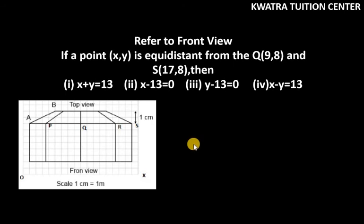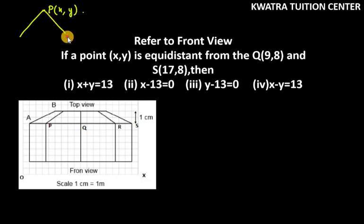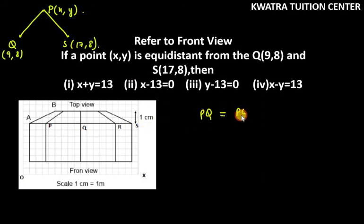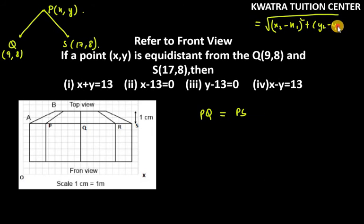The last part says: if a point (x, y) is equidistant from Q and S, find the relation. We use the distance formula: square root of (x2 minus x1) squared plus (y2 minus y1) squared, setting PQ equal to PS.